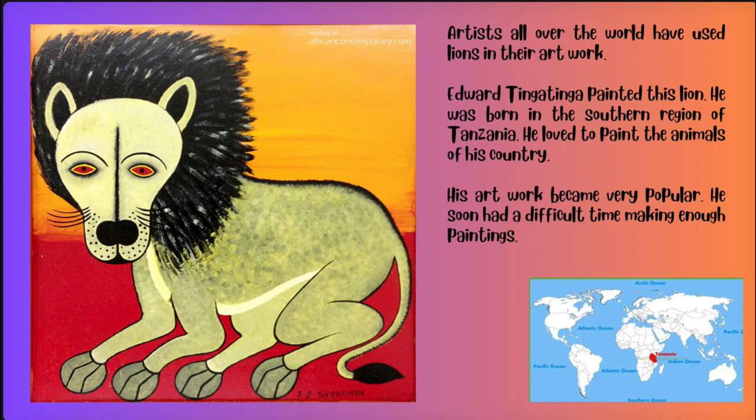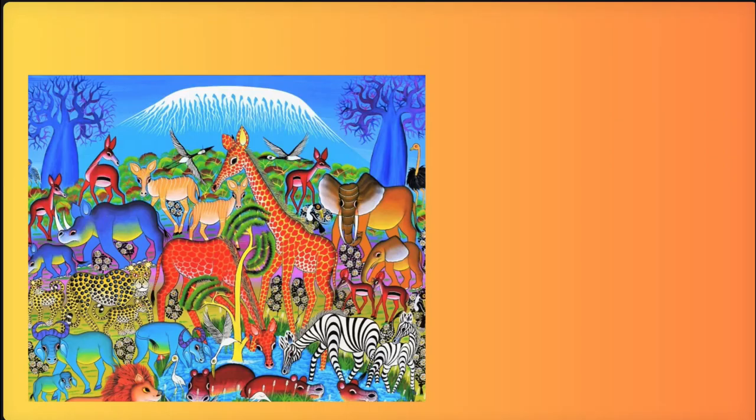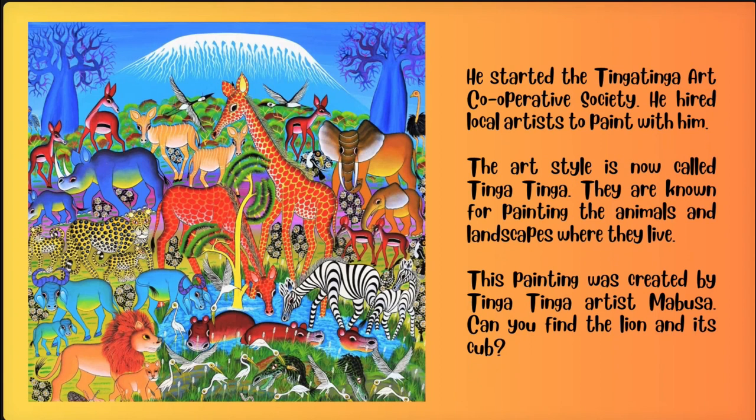His artwork became very popular, and he soon had a difficult time making enough paintings. He started the Tingatinga Art Cooperative Society and hired local artists to paint with him. The art style is now called Tingatinga, and they are known for painting the animals and landscapes where they live.